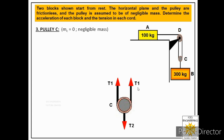The two upward cord tensions are both equal to T1, since this cable is connected to block A and tension is the same throughout the cable. When block B moves downward, pulley C also moves downward. However, since we assume the mass of the pulley is zero, ΣFy = m·a reduces to ΣFy = 0.